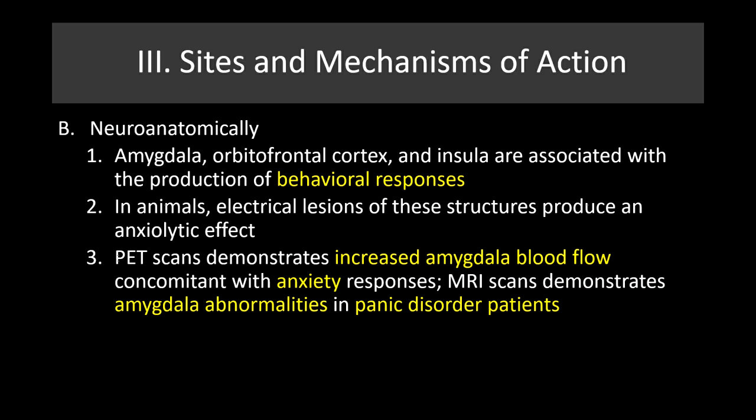Neuroanatomically, the amygdala, orbital frontal cortex, and insula are associated with producing some of the behavioral responses to anxiety. If we lesion these structures in animals, we get a reduction in anxiety. PET scans show increased amygdala blood flow associated with anxiety responses, and MRI scans show amygdala abnormalities in panic disorder patients. The amygdala is part of our primal emotional center — fear and anxiety are important for survival, but when that response is triggered by things that shouldn't be anxiety-inducing, or is constant and disrupts a person's life, that's when we consider treatment.